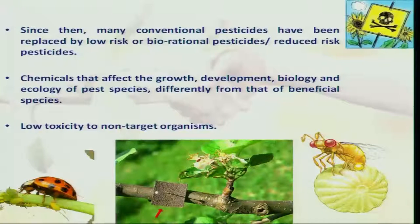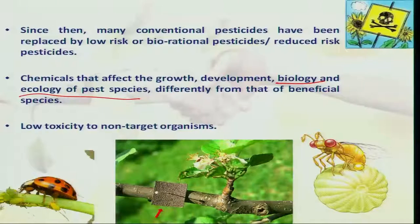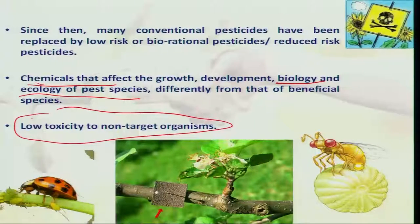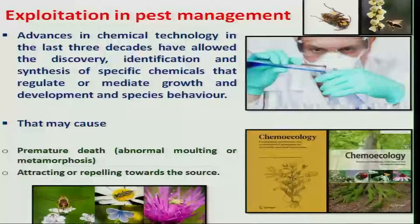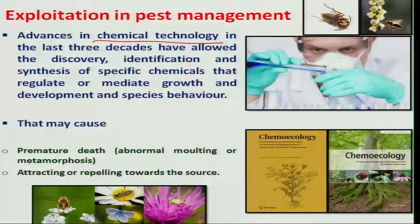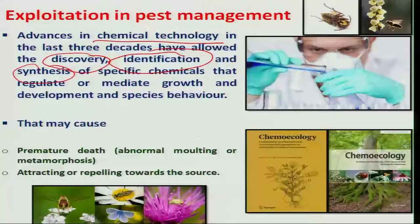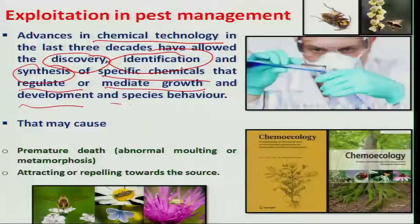Chemicals that affect the growth, development, biology, and ecology of pest species can be looked at differently. These chemicals are safe to natural enemies since they have low toxicity in nature. Insects depend on chemicals and chemical cues for their communication, and this phenomenon has been used in pest management. Much work on chemical technology has been ongoing for three to four decades, resulting in the discovery, identification, and synthesis of specific chemicals that regulate and mediate insect development and species behavior.